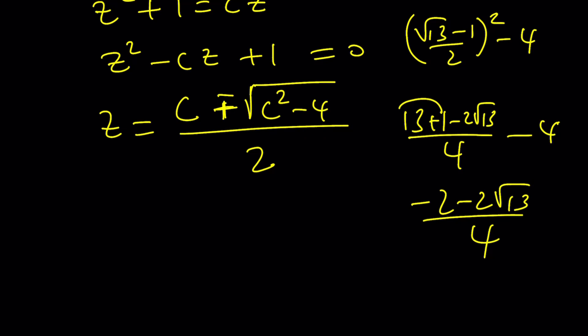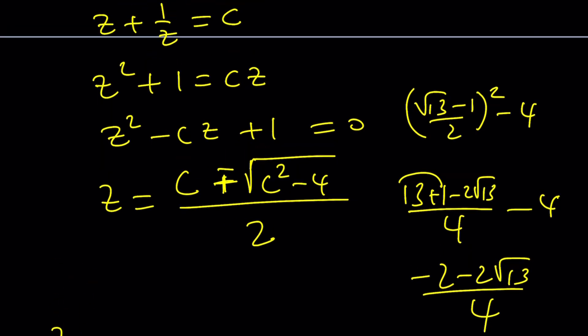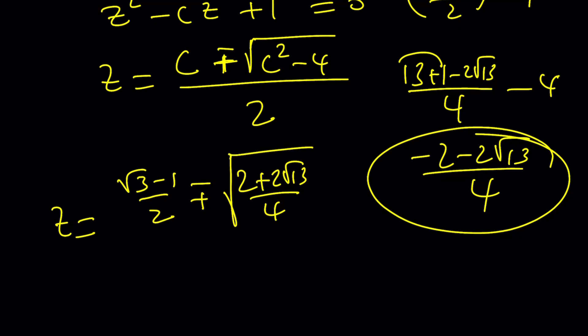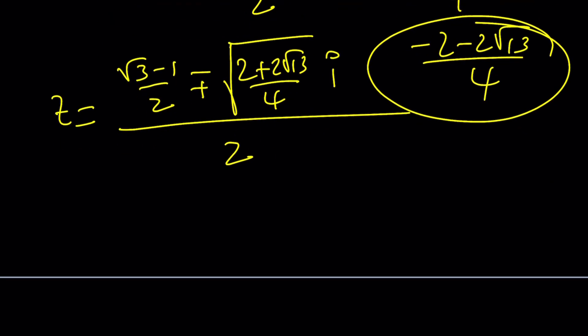But basically the whole idea is z is going to equal c which is root 13 minus 1 over 2 plus minus the square root of c squared minus 4 which is this by the way. And what I can do is, by the way I could have simplified it but anyways, times i divided by 2. And if you actually simplify this or take out, it's totally up to you. I could probably write it as follows. Root 3.